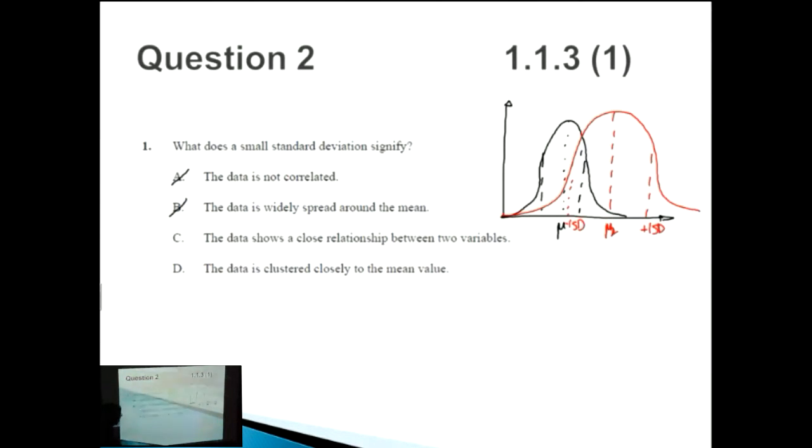C, the data shows a close relationship between two variables. It's very similar to A. We're not really talking about the relationship between two variables with standard deviation. With standard deviation, you have to remember that standard deviation is associated with spread. A high standard deviation means a high spread. A low standard deviation means low spread. Once again, irrelevant. So therefore the answer is D.